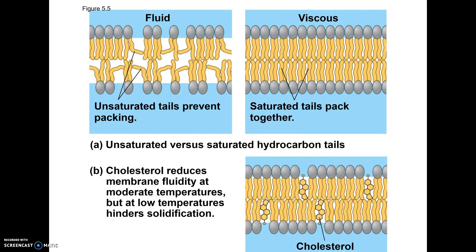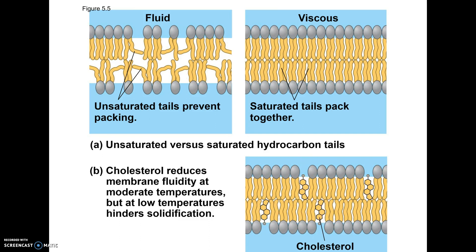When lipids are unsaturated, it prevents them from packing too tightly, which helps things pass through the membrane. Cholesterol in the membrane also helps, particularly at low temperatures, to maintain the fluidity of animal membranes.